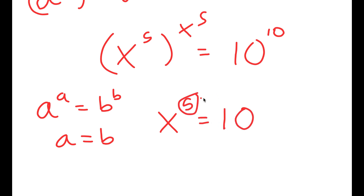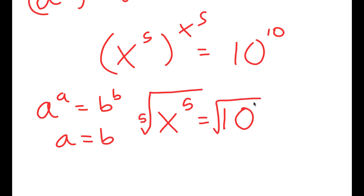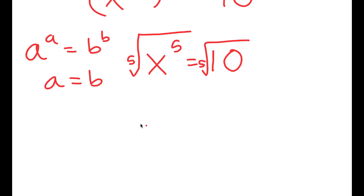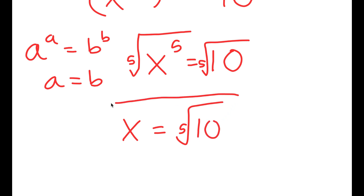Now to solve this we need to get rid of this power of 5 by taking the fifth root on both sides. The fifth root of x to the power of 5 is x, so I get x is equal to the fifth root of 10. This is my solution.